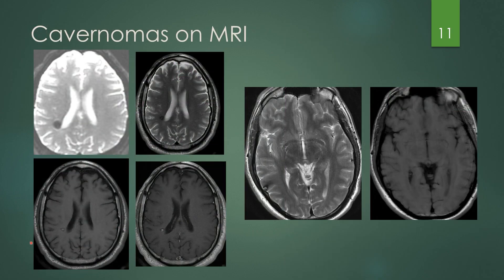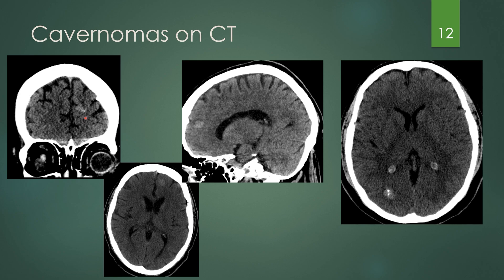Here are some cavernomas on MRI. You have that susceptibility artifact, hyperintensity on T1 centrally, and on post-contrast it's even a little brighter. On T2, you have bright signal in the center and the hypointense T2 signal rim. Here's a more peripheral cavernoma, which can cause seizures by disrupting cortical function. On CT it just looks like a speck of hyperdensity and could easily be mistaken for an intraparenchymal hemorrhage. A popcorn calcification pattern can suggest cavernoma, but MRI is needed to confirm.